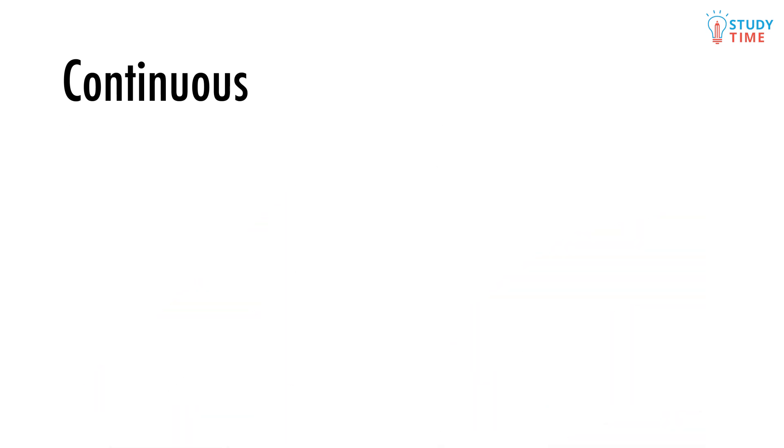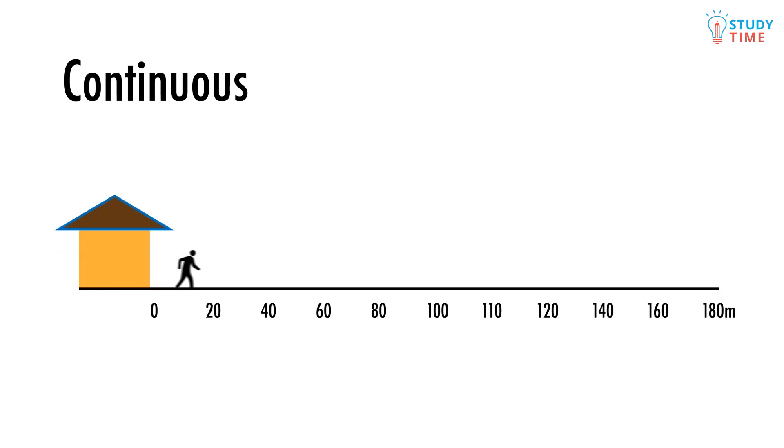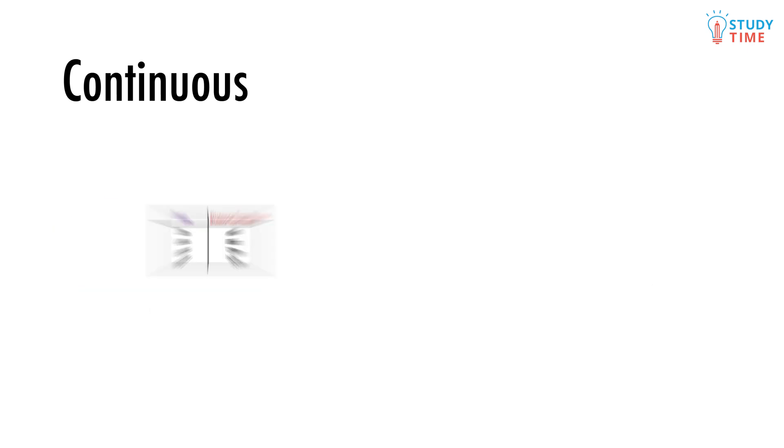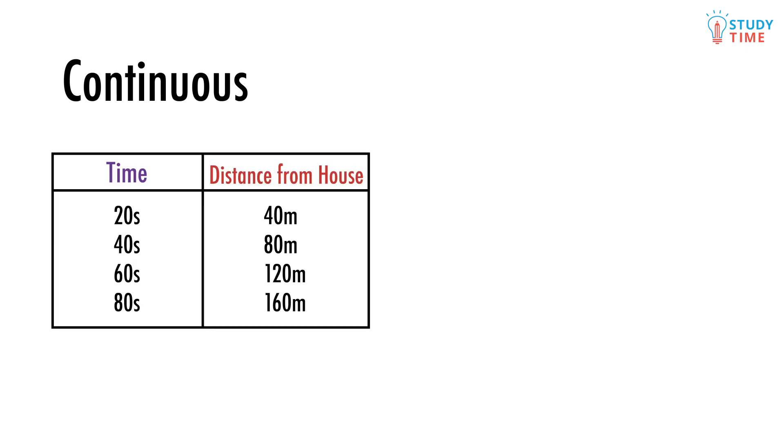Imagine you go for a casual walk in a straight line, and every 20 seconds you measure how far you are from your house. You might have a table of data like this. These are specific measurements, and on a graph of distance over time you would have the measurements marked out like this.